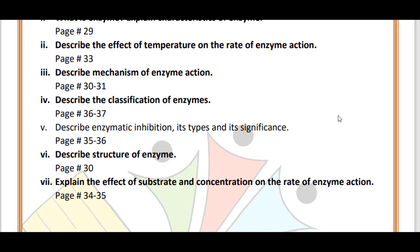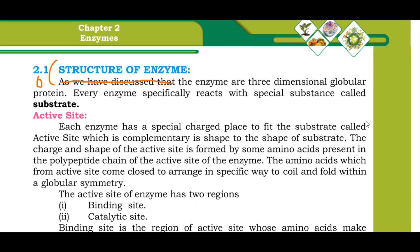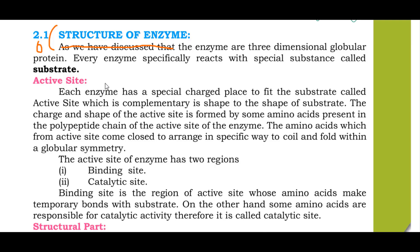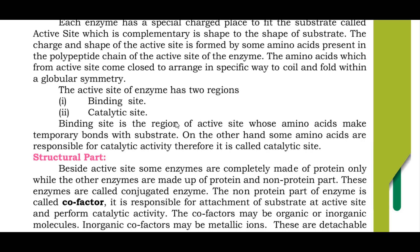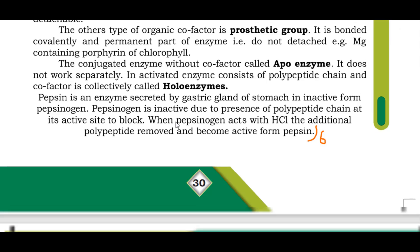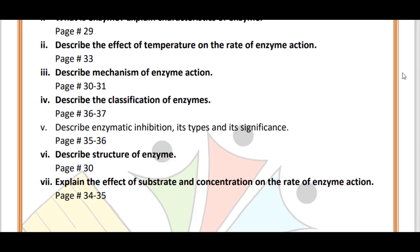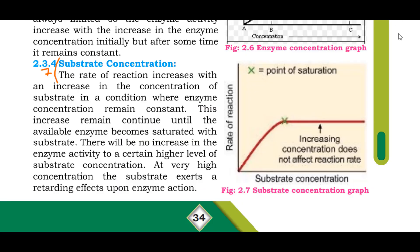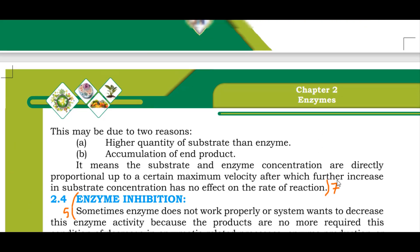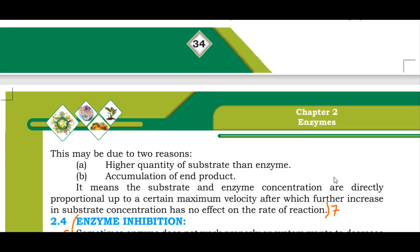Question six: Describe the structure of an enzyme. Open page 30, where the heading 'Structure of Enzyme' is found. Mark from 'the enzyme' onwards. The active site and its two regions should be described, followed by the structural part. Question seven: Explain the effect of substrate concentration on the rate of enzyme action. This is on pages 34 to 35, under the heading 'Substrate Concentration,' with a graph diagram showing the rate of reaction.